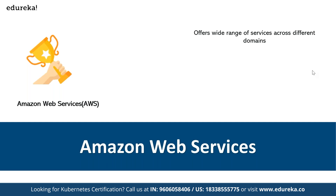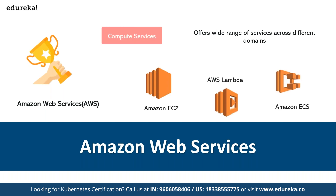AWS offers a wide range of services across different domains. Under compute, you have EC2, Lambda, and ECS. ECS is a containerization service on AWS. When you migrate your infrastructure from on-premises to cloud, everything is virtual — as a customer you don't need any physical infrastructure at all.